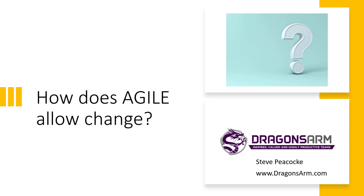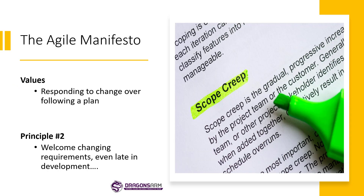So how does Agile allow for change? The Agile manifesto itself states one of the four main values: responding to change over following a plan. So we value that responding to change even though we've got a plan.